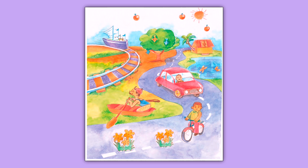Now moving on to the next funny thing. Children, as you can see in this picture, fishes are hanging from the tree. एक tree बना हुआ है जिस पर fishes लटक रही हैं। क्या ये possible है कि tree पर fishes लटकें? No. Fishes तो pond में रहती हैं, water में रहती हैं। वो tree पर hang नहीं होती हैं। So this is the second funny thing in this picture.